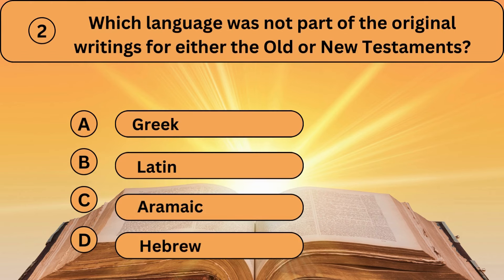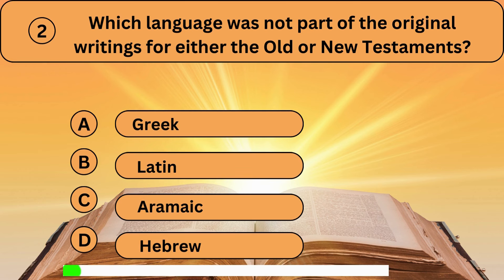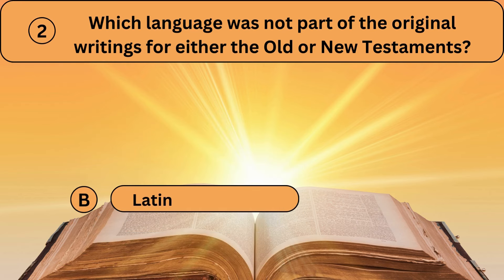Question two. Which language was not part of the original writings for either the Old or New Testaments? A. Greek. B. Latin. C. Aramaic. D. Hebrew. Latin is the correct answer.